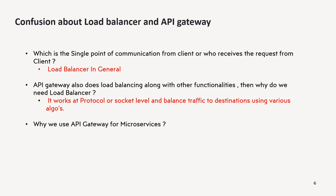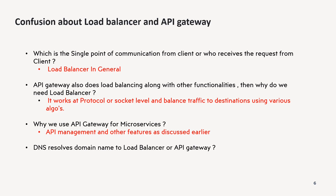Third: why do we use API gateway for microservices and why is it so popular? Because of API management, rate limiting, circuit breaker, authentication/authorization/auditing, and many more capabilities. API gateway configuration can be very complex to maintain, as seen in many projects, but ultimately it is very useful because your organization has one place where you can see and manage all the APIs being served — that is why API gateway is used in microservice architecture.